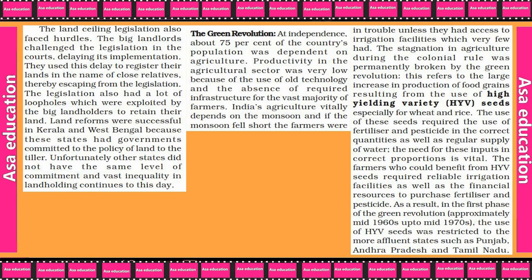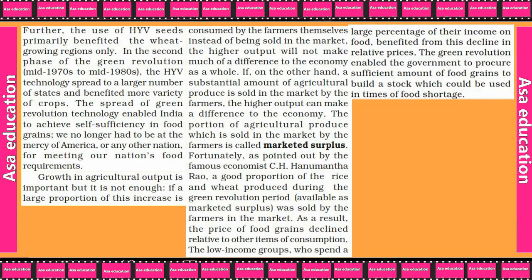The farmers who could benefit from HYV seeds required reliable irrigation facilities as well as financial resources to purchase fertilizer and pesticides. As a result, in the first phase of the Green Revolution — approximately mid-1960s to mid-1970s — the use of HYV seeds was restricted to the most affluent states such as Punjab and Andhra Pradesh, and primarily benefited wheat-growing regions only.